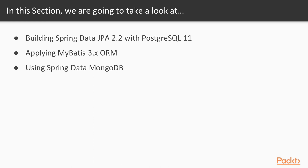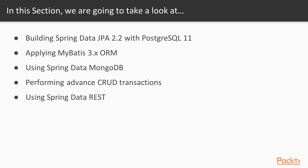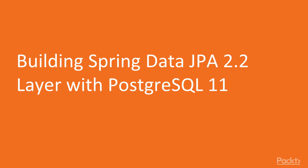Aside from the relational database approach, we will be learning how to perform data persistency using MongoDB NoSQL data source. Advanced topics such as using Query DSL predicates, Spring Data REST, and Spring HATEOAS will also be covered. Let us now start our first entry, which is Performing Data Persistency using Spring Data JPA 2.2.